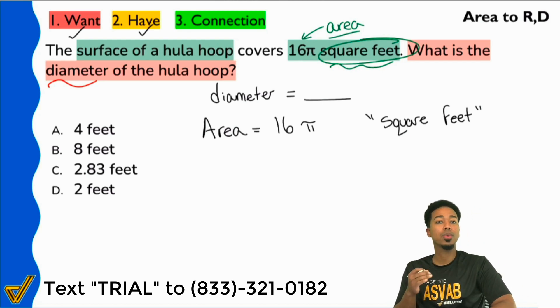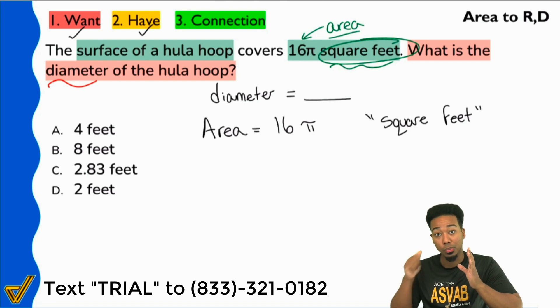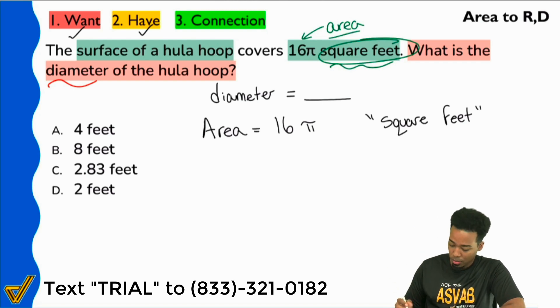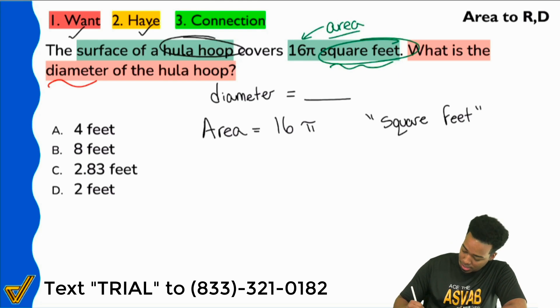The moment that you recognize a math term that is related to a formula or has a formula, boom, you want to make sure you can recall it instantly. And so that formula is this. We know we're talking about a circle because it's a diameter, radius, right? A hula hoop. We know that that's a circular object. And so we're looking at the area of a circle. Its formula is this. Area equals πr².